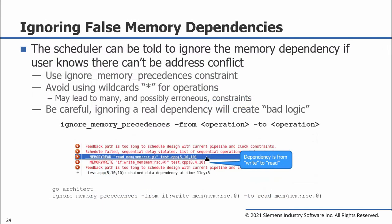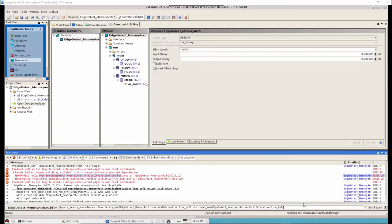The Catapult scheduler can be told to ignore the memory dependency if the user knows that there is no address conflict. This is done using the ignore memory precedence constraint. Care must be taken here because ignoring a real dependency will create bad logic — the designer must be able to prove to themselves that there is no address conflict. The ignore memory precedence command takes as its arguments a from and a to operation; in this case the dependency is from write to read. The ignore memory precedence constraint should be issued after the Go Architect synthesis stage, and in this case has been partially wildcarded to ignore the dependencies for both line buff 1 and line buff 0.